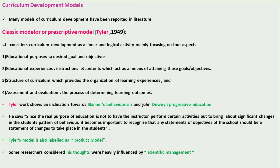The four aspects of Tyler's model are: first, educational purposes and desired goals and objectives; second, educational experiences, instructions and contents which act as a means of attaining these goals and objectives; third, structure of the curriculum which provides the organization of learning experiences; and fourth, assessment and evaluation — the process of determining learning outcomes.